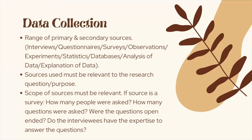The first thing you would always have to look at when thinking up strengths and weaknesses would be the method of data collection. One thing to look out for is whether or not there's a range of primary and secondary sources, because when you have a range of both, that's generally what makes the research good. Primary sources may include interviews, questionnaires, surveys, observations, and experiments. Secondary sources may include statistics, databases, analysis of research, explanation of data — anything that is not original but stems from another source.